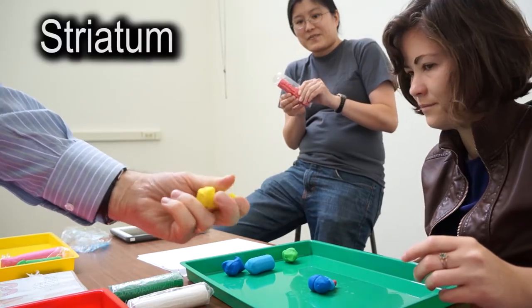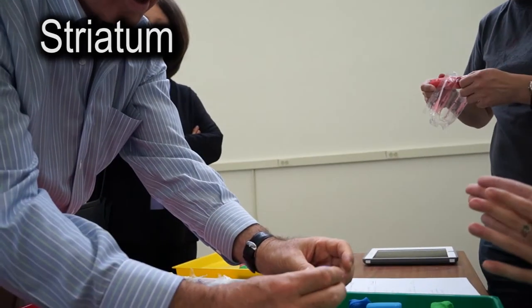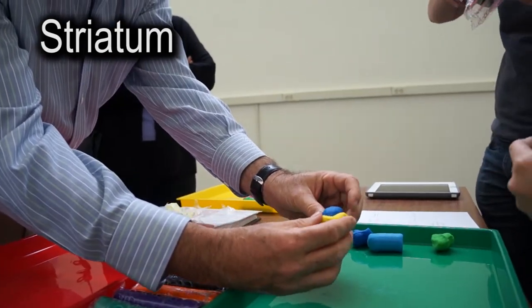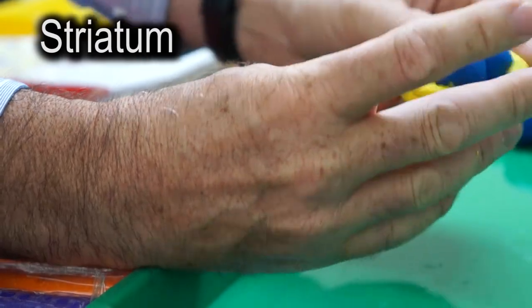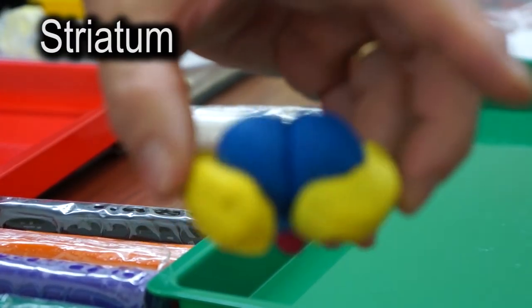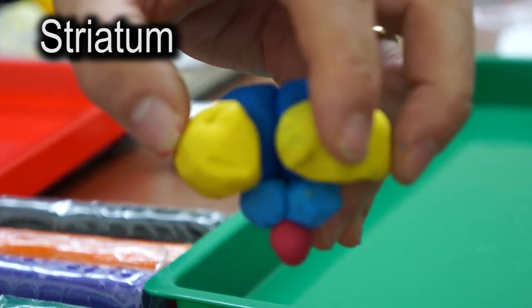So striatum. I have two striata. It's going to be towards the front, like this. I've used it for years. Yellow is the striatum, and it's surrounding the blue thalamus.